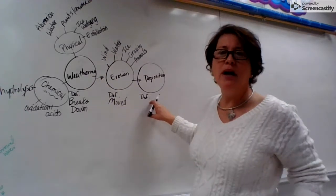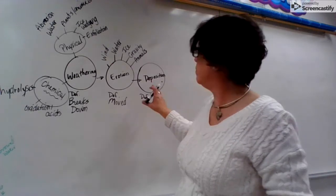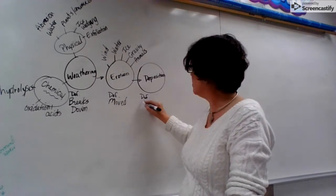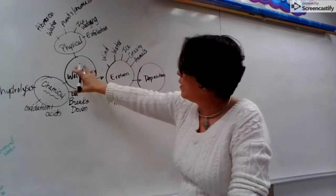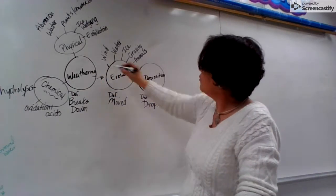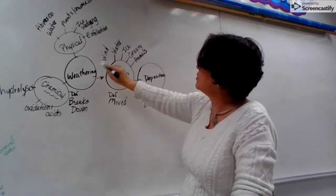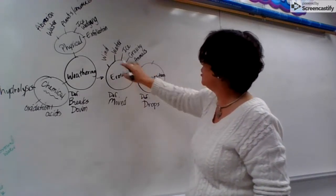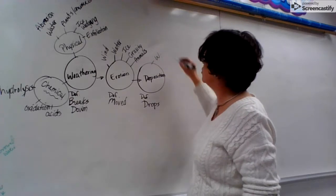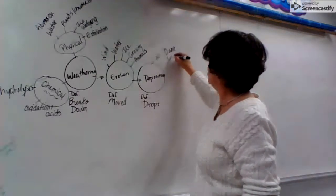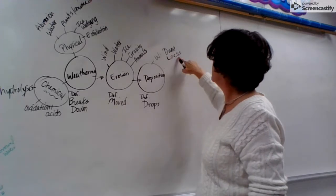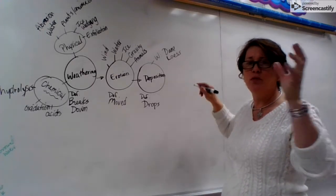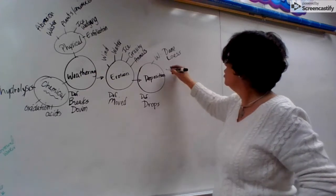And then lastly, depositing stuff. What's the definition of deposition? Our definition in class was drops. So stuff gets weathered, it gets moved, and it gets dropped. All these agents move this earth material: wind, water, ice, gravity, and animals or humans. What's the deposition of wind? For wind, a deposition would be a dune or loess, a powdery particulate of the ground. It's very dusty. When it blows in the wind, it kind of cakes on things. That's loess.